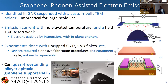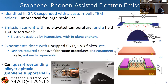The biggest issue with graphene nanoribbons is the very complicated way of producing an electron source — you have to suspend it, which is really impractical for large-scale production. Emission current with no elevated temperature on a field that's a thousand times too weak, where electrons are assisted by interactions with in-plane phonons — phonons moving in your freestanding material knocking electrons out as they pass, allowing them to be liberated and accelerated. This has been done with unzipped carbon nanotubes and CVD flakes, but all require extensive fabrication, are fragile, and not easily reproducible.